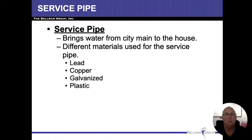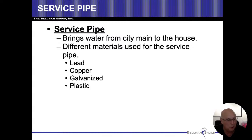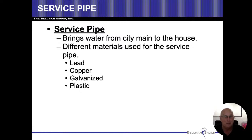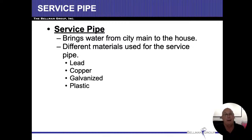In our SOP, we have to describe the material of the service pipe — that's different from the supply lines. The service pipe is what comes in from the street and stops at the water meter. After the water meter, those are our supply lines inside the house. Materials include copper, galvanized, plastic, and lead, which is very common in our area. Copper is easy to identify because it's copper-colored; plastic is also easy to identify.